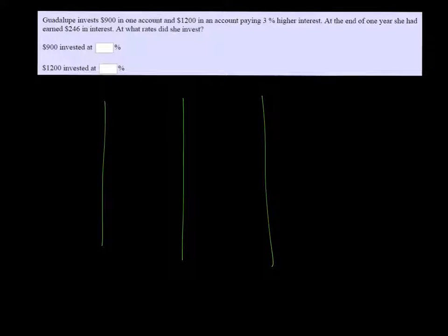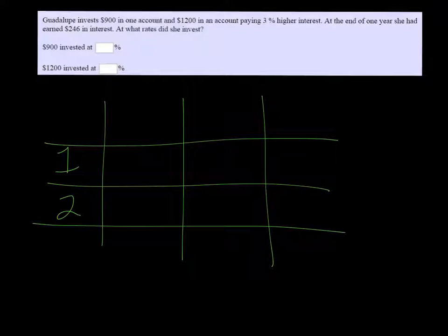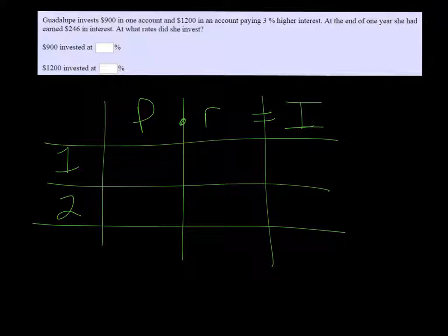Let's make a table. We have account 1 and account 2. We know that principal times rate equals interest. Time is just one year, so we don't have to worry about that.